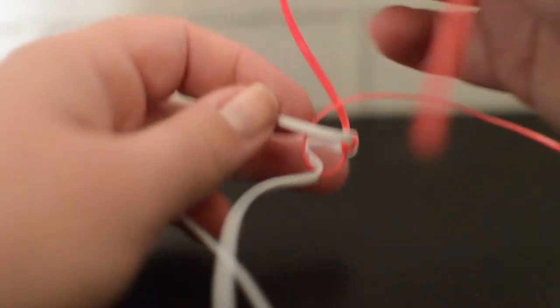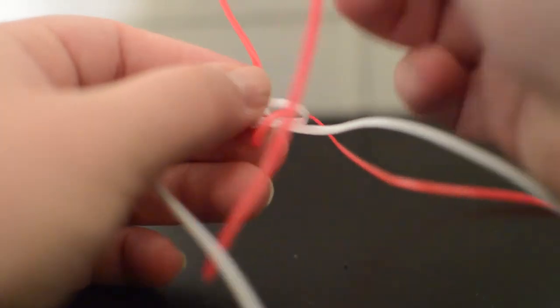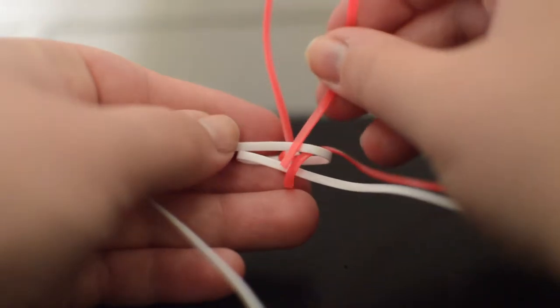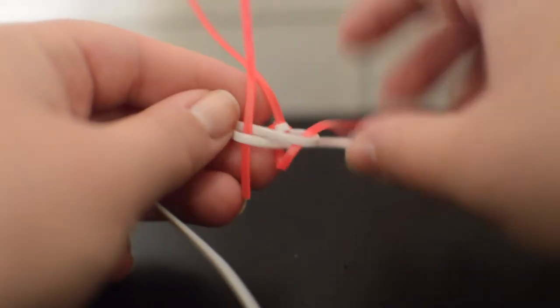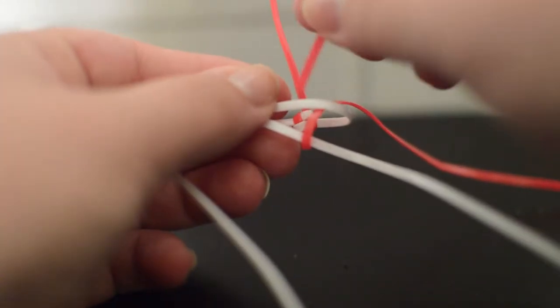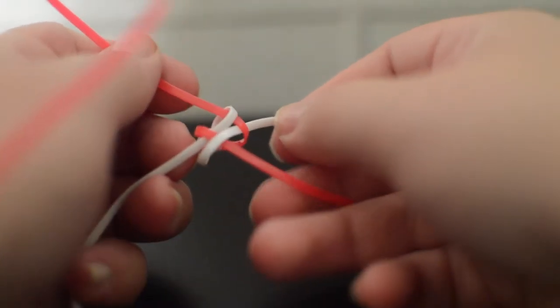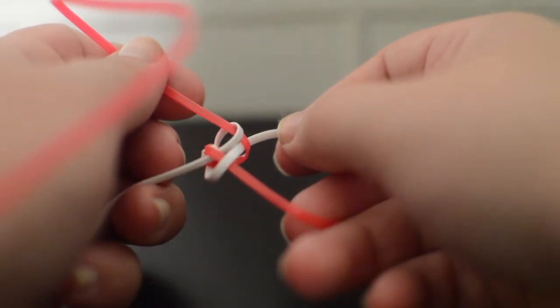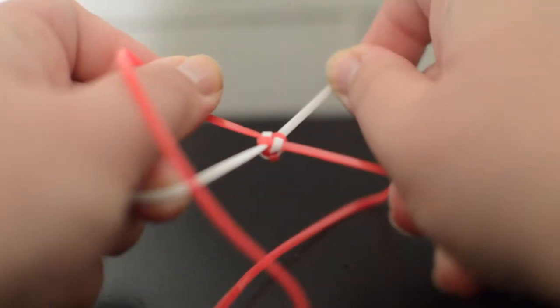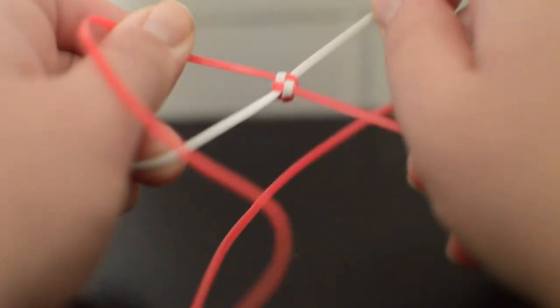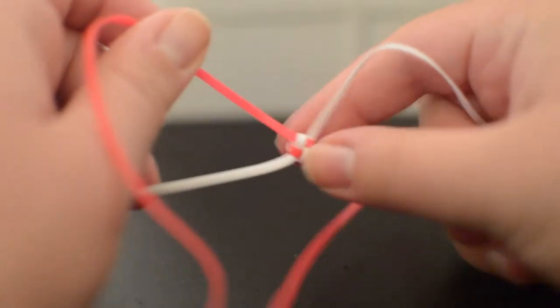Over and into the loop, so you've made a loop here. Now you're going to pull tight. I like to pull on each of them, so I've got this one on this finger, this one on this finger, and this one over here. I pull them all at the same time, kind of wiggle it as I go, making that nice and tight.